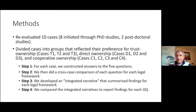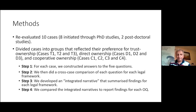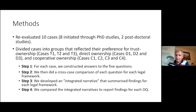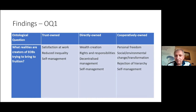We have 10 cases divided by their preference for legal form: three cases where trust ownership is dominant (T1, T2, T3), three cases where direct ownership is dominant (D1, D2, D3), and four cases where cooperative ownership is dominant — all constituted as societies rather than companies or trusts. For every case we tried to answer the five questions, then compared within each legal framework, wrote an integrated narrative, and compared those narratives to prepare the paper.